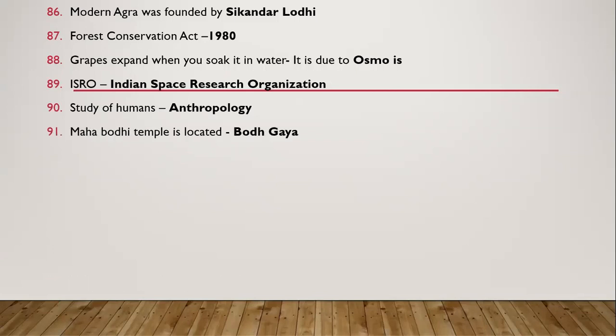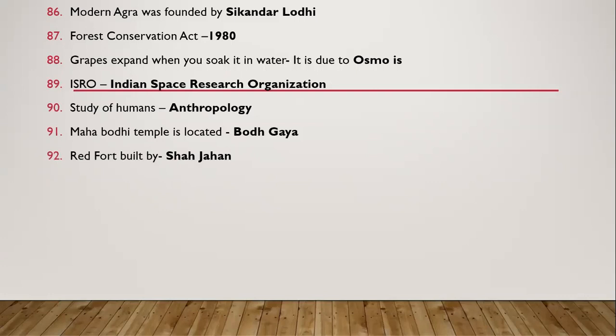Question 91: Mahabodhi Temple is located at Bodh Gaya. Question 92: Red Fort built by whom? It is Shah Jahan.